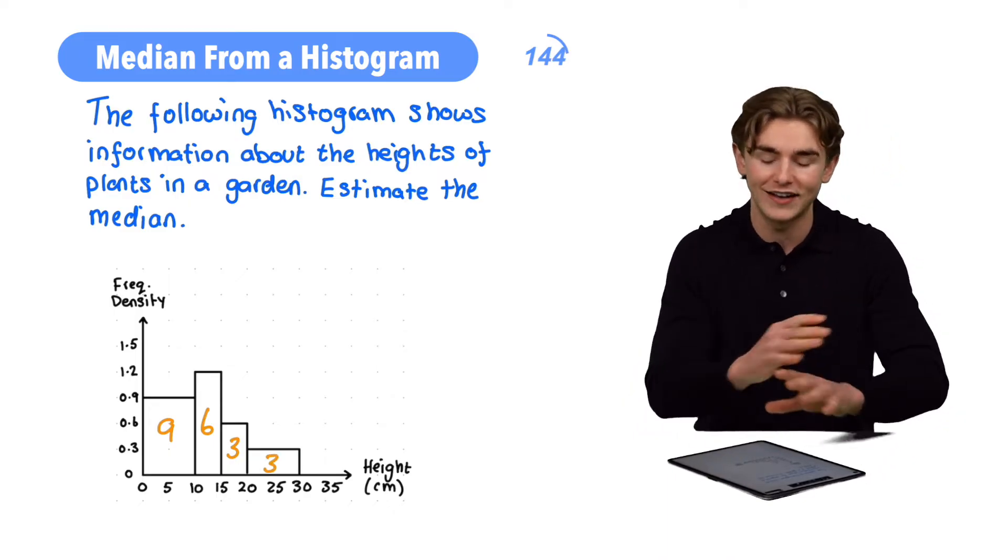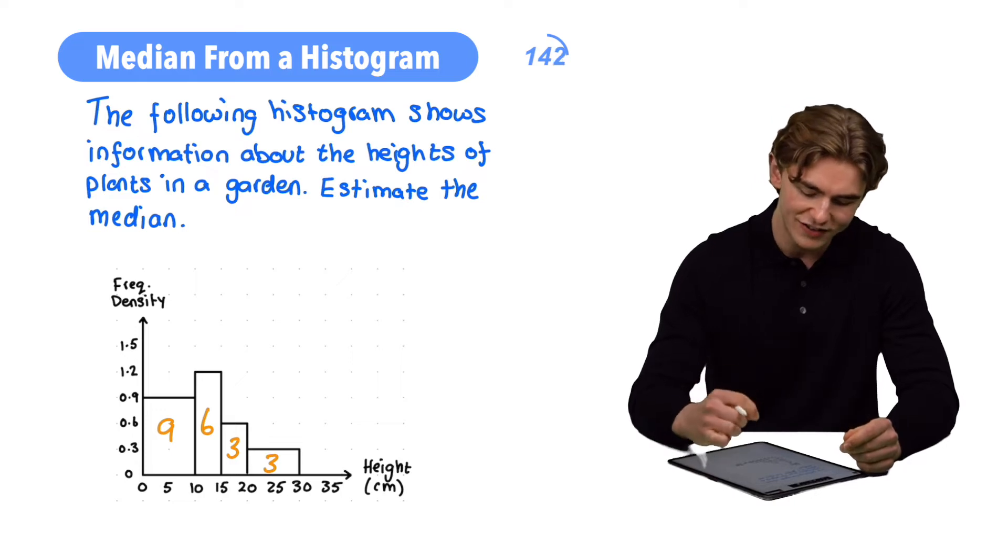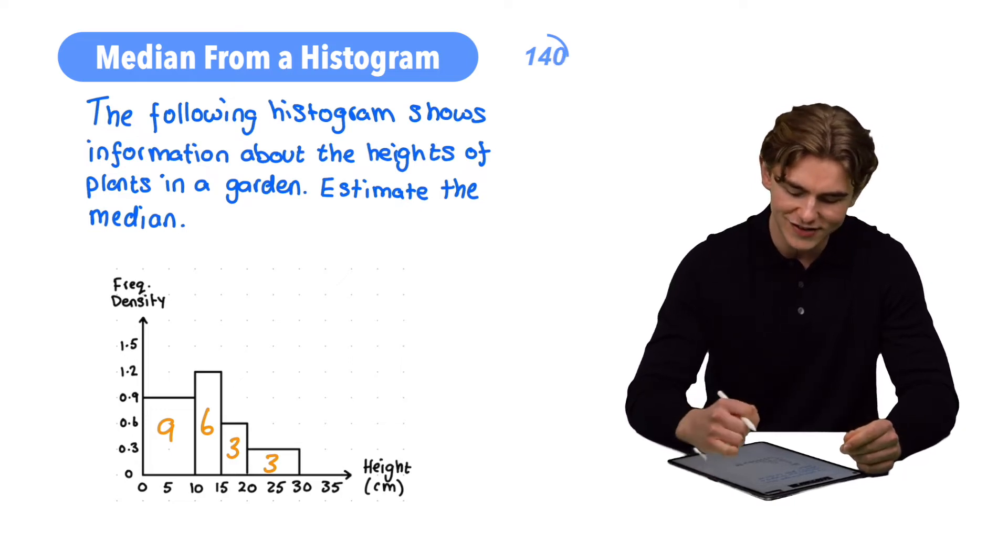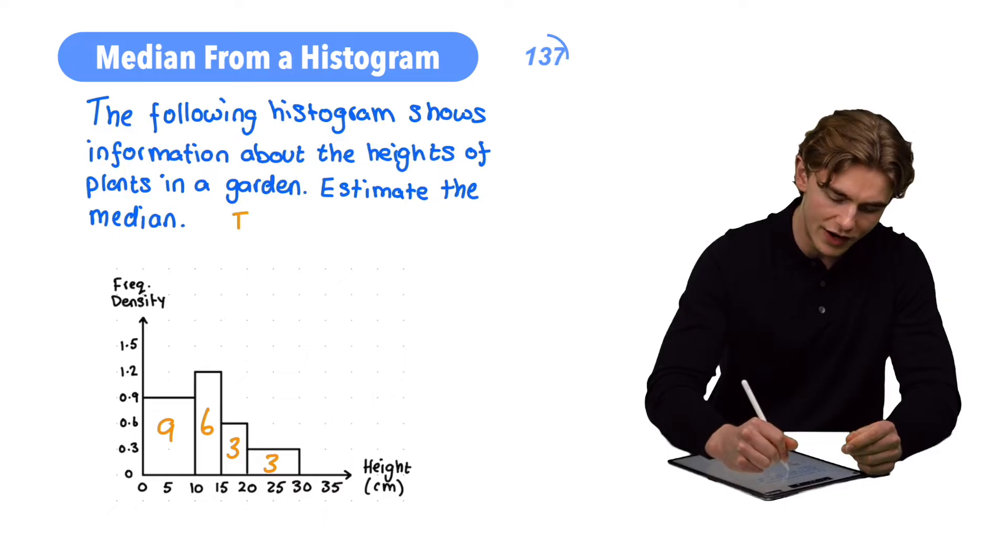Now finding our total frequency, we're going to add together all of those frequencies, 9 plus 6 plus 3 plus 3, that is going to be 21. So the total frequency is equal to 21.